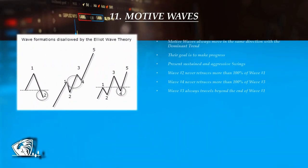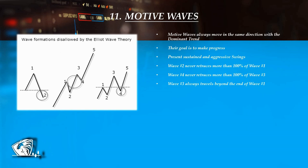Motive waves always unfold in the same direction of the dominant trend and their goal is to make progress. They are easy to recognize because of their sustained and violent moves. Within a motive swing, wave 2 never retraces more than 100% of wave 1, wave 4 never retraces more than 100% of wave 3, and wave 3 will always surpass wave 1. As Eliot stated, wave 3 mustn't be the shortest motive wave. Therefore, as long as it travels within a higher percentage than either wave 1 or wave 5, the rule is fulfilled.